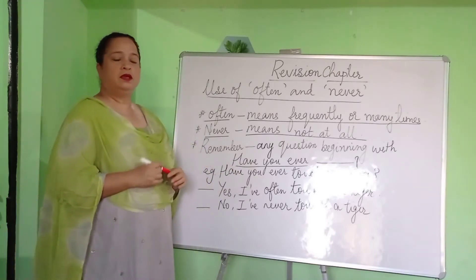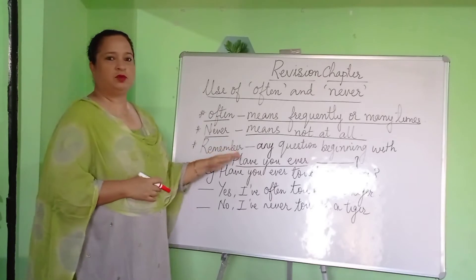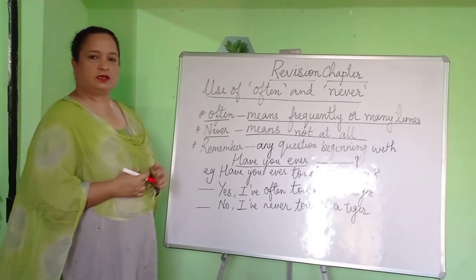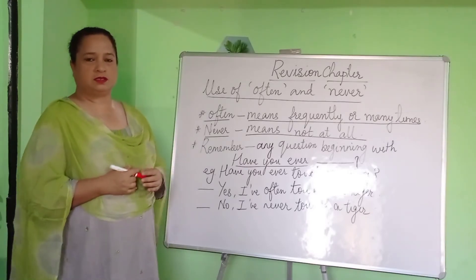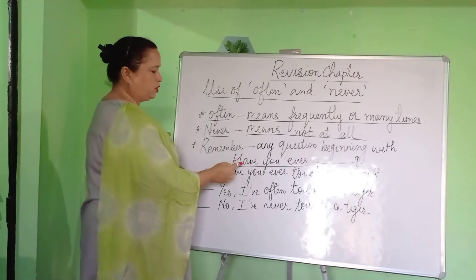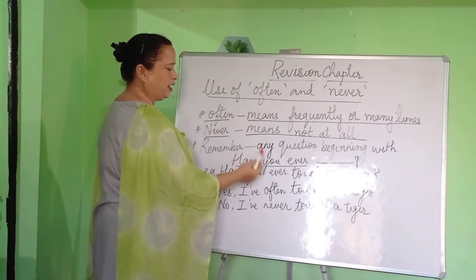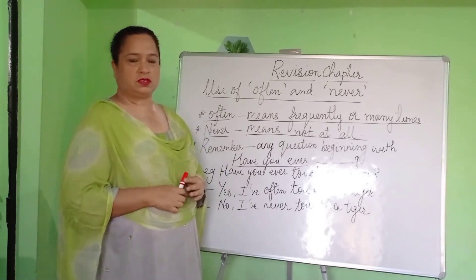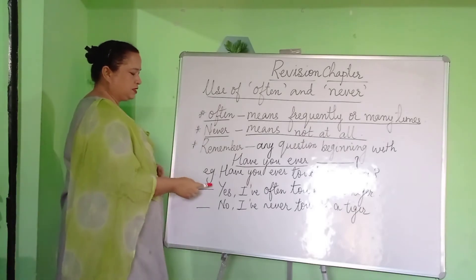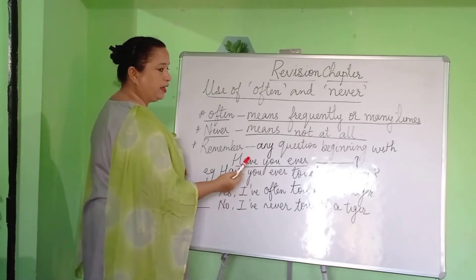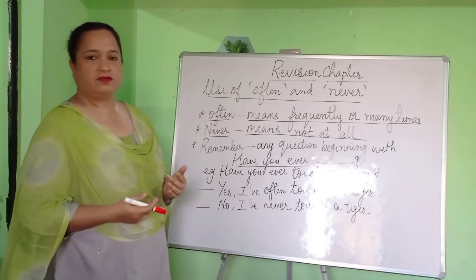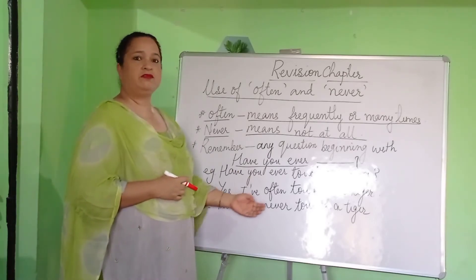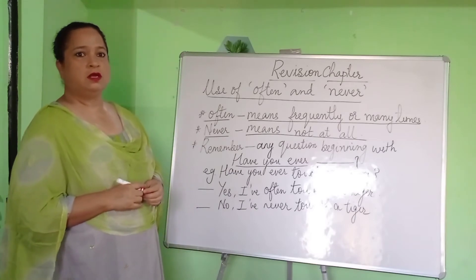So now let us remember one thing. Any questions beginning with 'Have you ever?' — how do we answer them? We come across many questions like this but we always get confused. When you have a question beginning with 'Have you ever', if the answer is positive, we must start our answer using 'Yes, I have often.' And if you have a negative answer, you must write your answer using 'No, I have never' and then continue with the rest of the sentence.